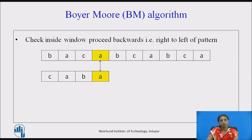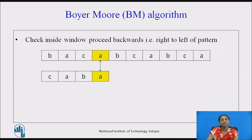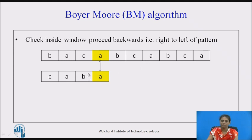We have already seen the brute force approach and KMP algorithm, in which we slide our window from left to right and compare the text from left to right. In Boyer-Moore, the check inside the window proceeds backwards. So we move through the text from left to right, but the checking inside the window is from right to left. We place a window and start comparing from the rightmost character.